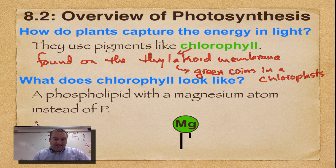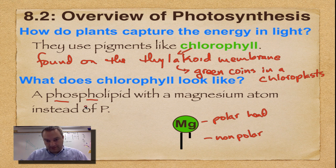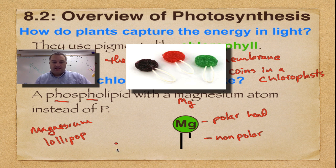So what does chlorophyll look like? It's kind of a magnesium lollipop and it looks kind of like a phospholipid. Just like a phospholipid, it has a polar head and a non-polar tail, so you can see how it fits inside a membrane perfectly. It's not a phospholipid — you could call it a magnesium lipid — but instead of having a phosphorus, it's got magnesium. So I like to remember this as a magnesium lollipop with two sticks.